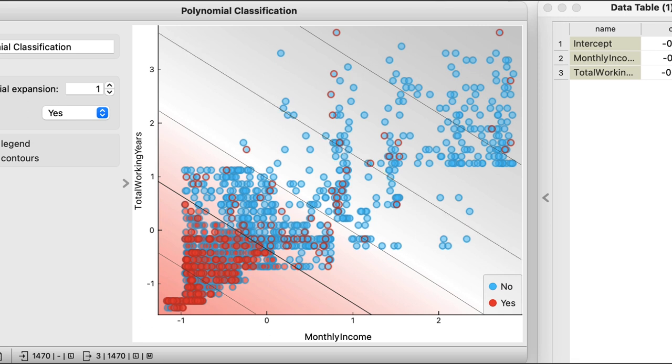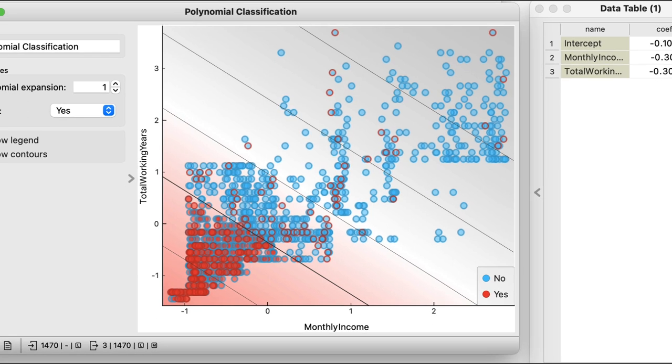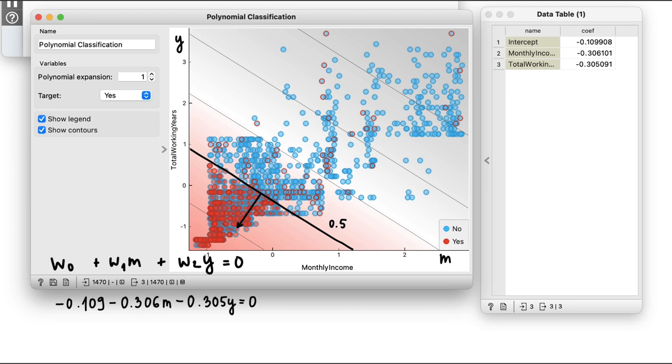Now how does one compute the distances from the decision boundary? Well, we use the equation that defines the decision boundary. To get the distance, just fill in the values for m and y. If the value is higher than zero, the employee will most likely leave the company. Otherwise, the employee will probably stay.